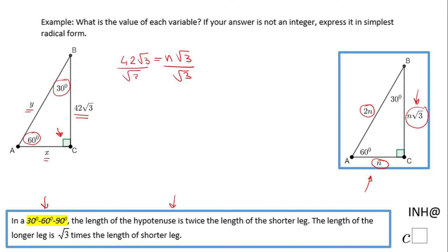Let's take a look back at the picture. What is this n? It's right here, which is the shorter leg. So x will be 42.